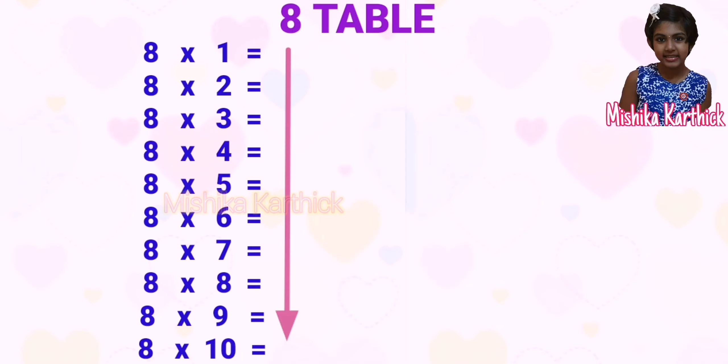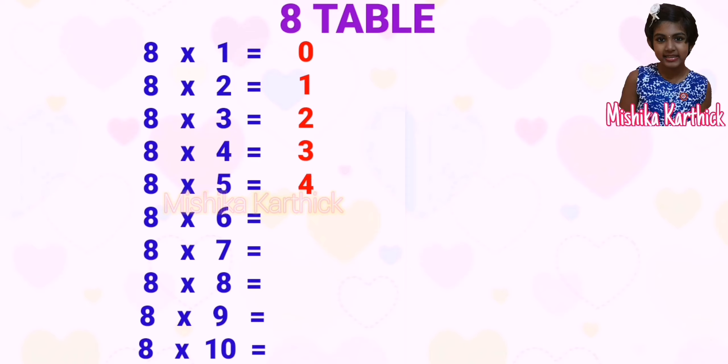First, we start from top to bottom and write the numbers 0 to 8. We begin by writing: 0, 1, 2, 3, 4.